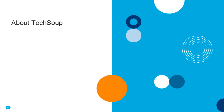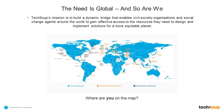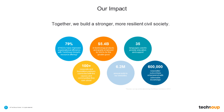TechSoup is located in San Francisco, California. We're a 501(c)(3) nonprofit, and what we do is work to empower organizations around the world to get the latest tools, skills, and resources to help them achieve their mission. We serve almost every country in the world and have 62 partner NGOs. We've helped organizations get more than $5.4 billion in technology products and grants from more than 100 corporate and foundation partners.